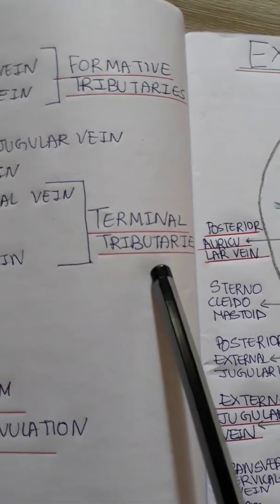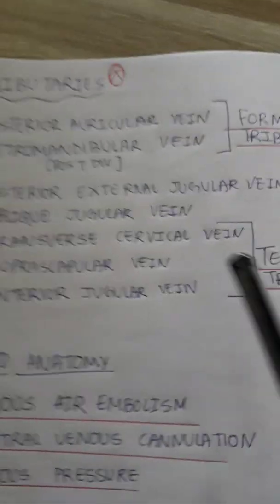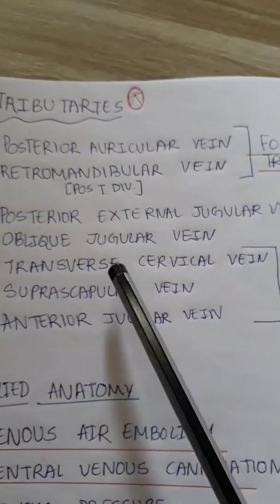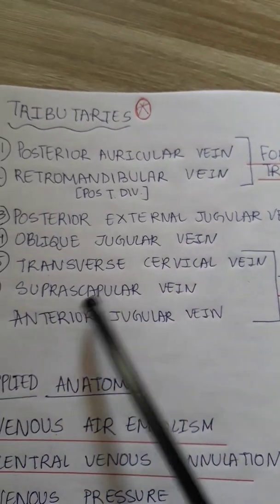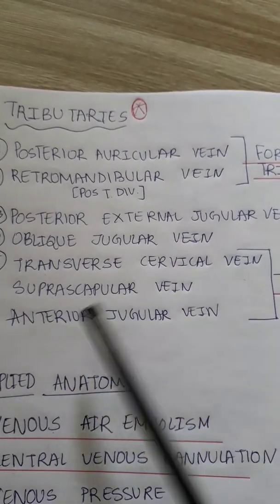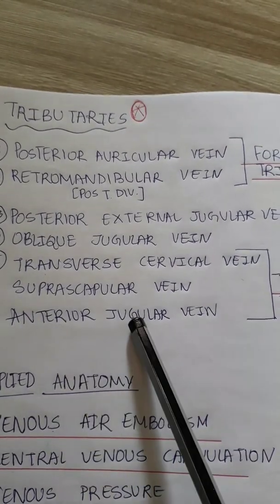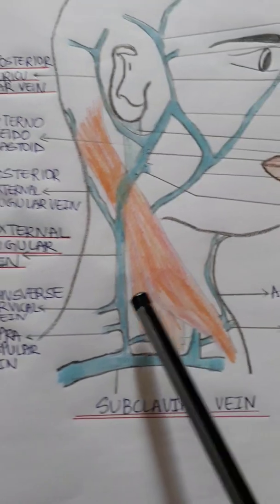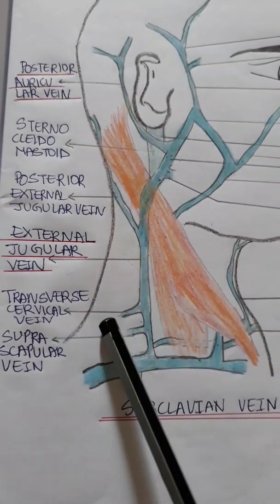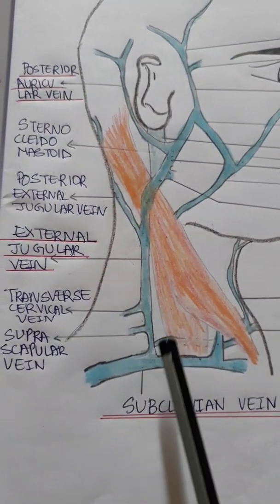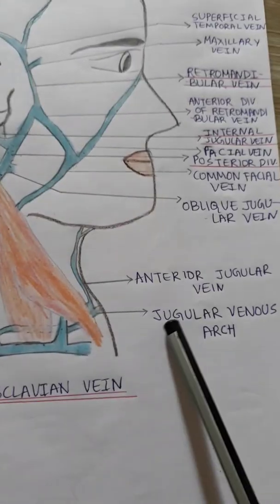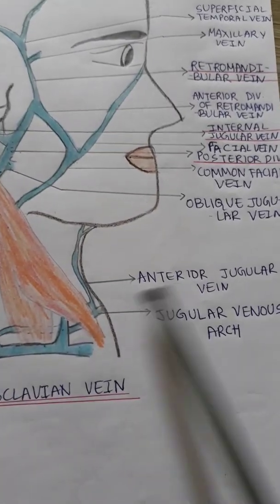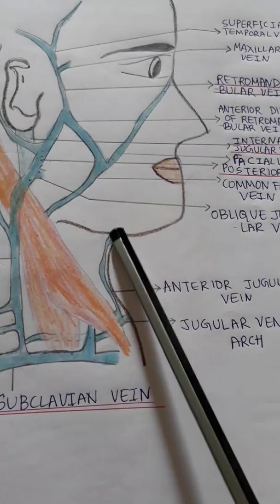The terminal tributaries are the transverse cervical vein, the suprascapular vein, and the anterior jugular vein.